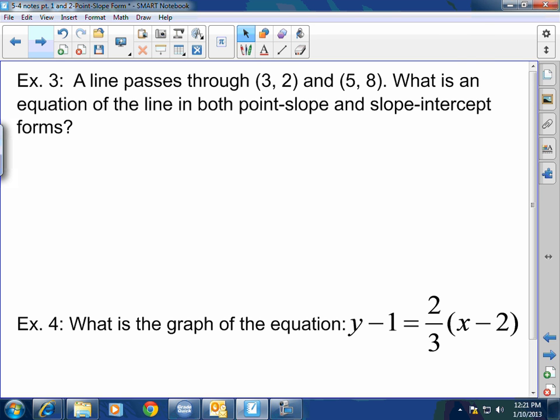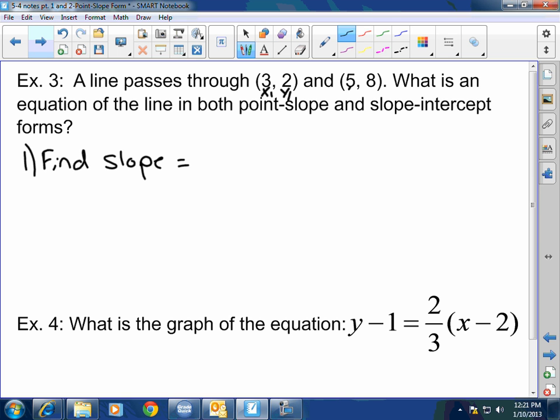Example 3. Now this is the fun part. A line passes through 3, 2 and 5, 8. What is an equation of the line in both point-slope and slope-intercept form? What do we do this time? You've got to find your slope, my brothers. So x₁, y₁, x₂, y₂. y₂ minus y₁ over x₂ minus x₁ is 6 over 2, which equals 3. And that is my m. Does everyone see how and why I found my m?